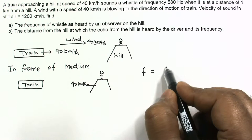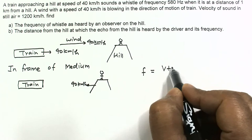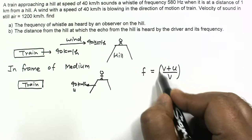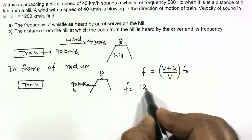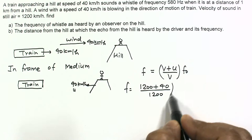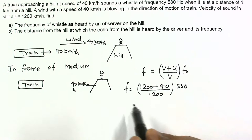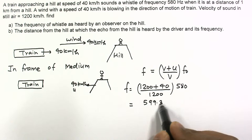For the frequency heard by the observer, since the observer is moving, the Doppler effect formula gives f equal to v plus u divided by v, into the original frequency f₀. The velocity of sound v is 1200, u is 40, and the original frequency f₀ is 580 Hz. On solving, this is equal to 599.33 Hz.